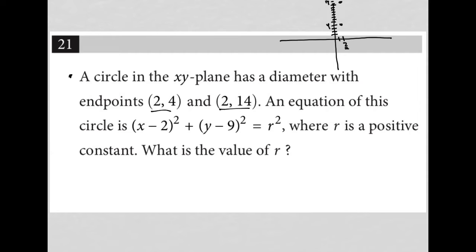And those are the endpoints of my circle. An equation of the circle is (x - 2)² + (y - 9)² = r². Now, this 2 here and this 9 actually tell me the center of the circle is at (2,9).